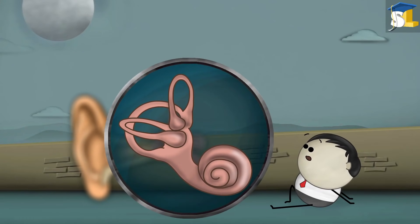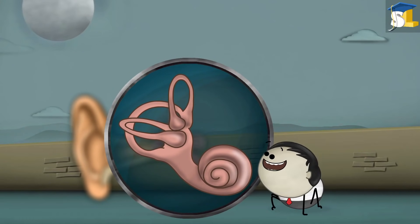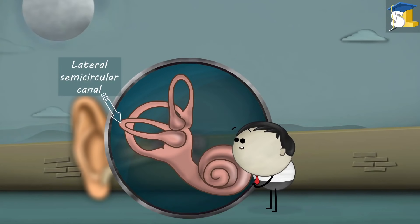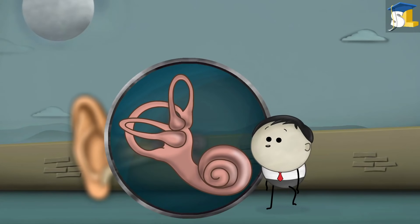The inner ear consists of three semicircular canals called superior semicircular canal, posterior semicircular canal, and lateral semicircular canal. The three semicircular canals are arranged in three different positions.